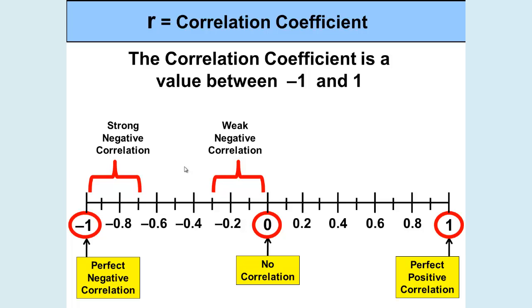If it falls close to the 0 on the negative side, we consider that a weak negative correlation. If it falls close to the 0 on the positive side, we consider this a weak positive correlation. And if it falls close to the positive one, we consider this a strong positive correlation.